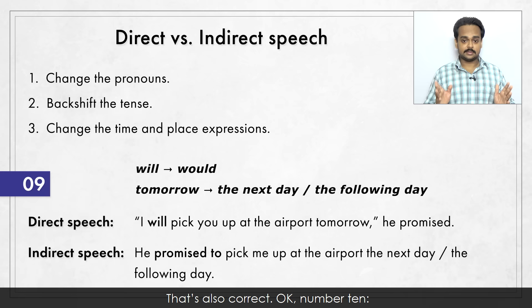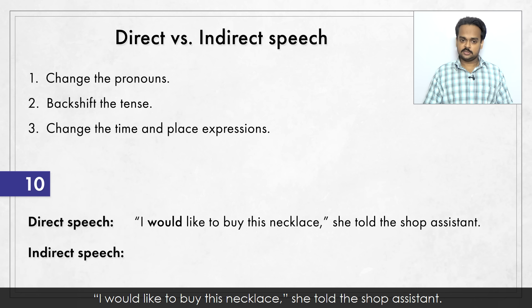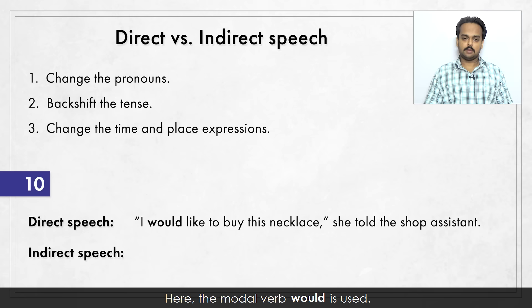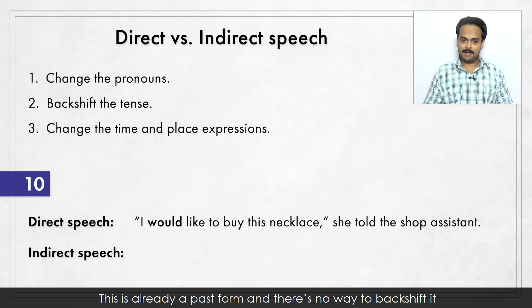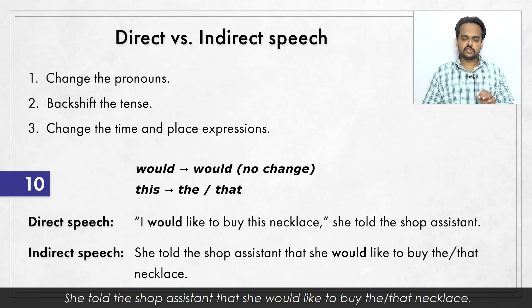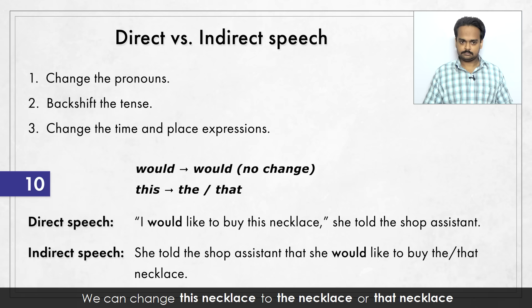Number ten: "I would like to buy this necklace," she told the shop assistant. Here the modal verb "would" is used. This is already a past form and there's no way to backshift it – there's no past perfect for modal verbs. So we just say: she told the shop assistant that she would like to buy the necklace or that necklace. We can change "this necklace" to "the necklace" or "that necklace" – both are OK.